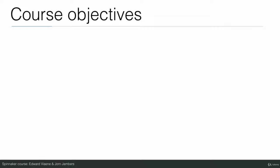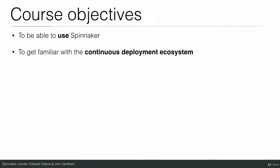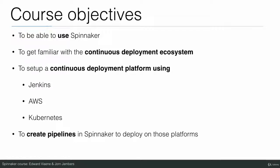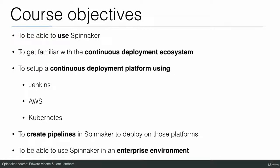What are the course objectives? To be able to use Spinnaker, to get familiar with the continuous deployment ecosystem, and to set up a continuous deployment platform using Jenkins, AWS, and Kubernetes. We will do our builds in Jenkins and then deploy on AWS or Kubernetes. And then to be able to use Spinnaker in an enterprise environment — we cover things like authentication to make sure you immediately have a secure cluster.